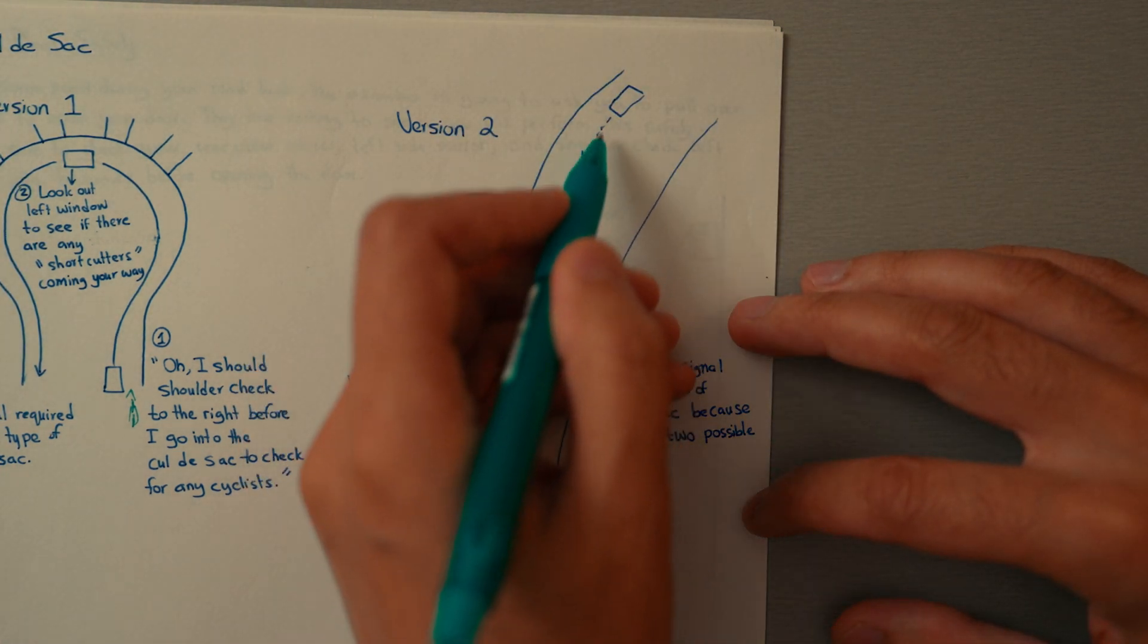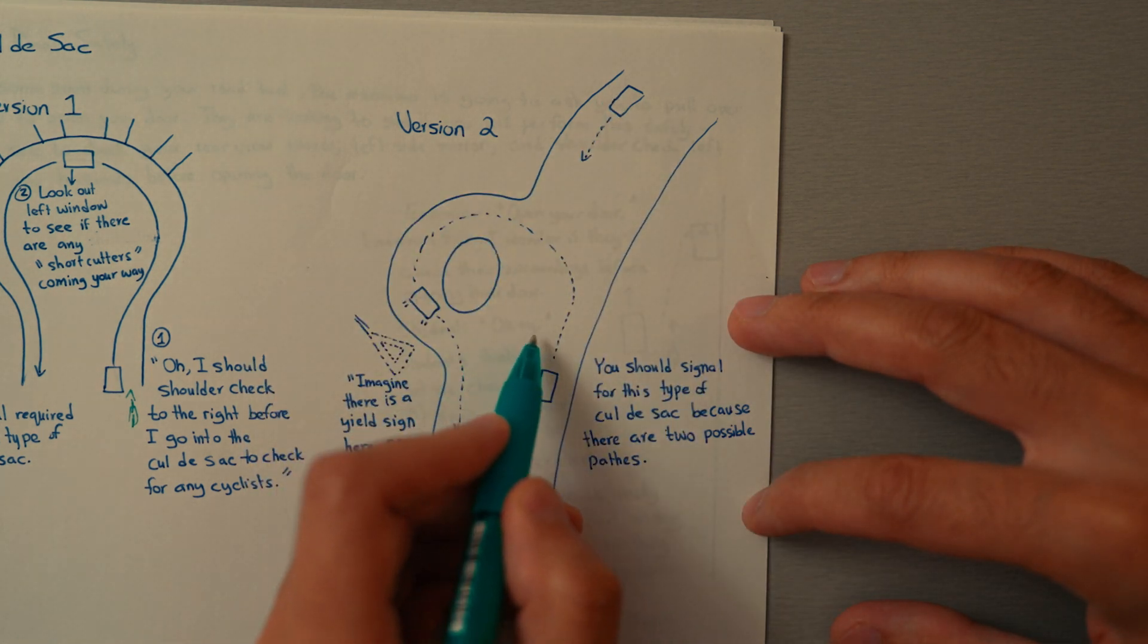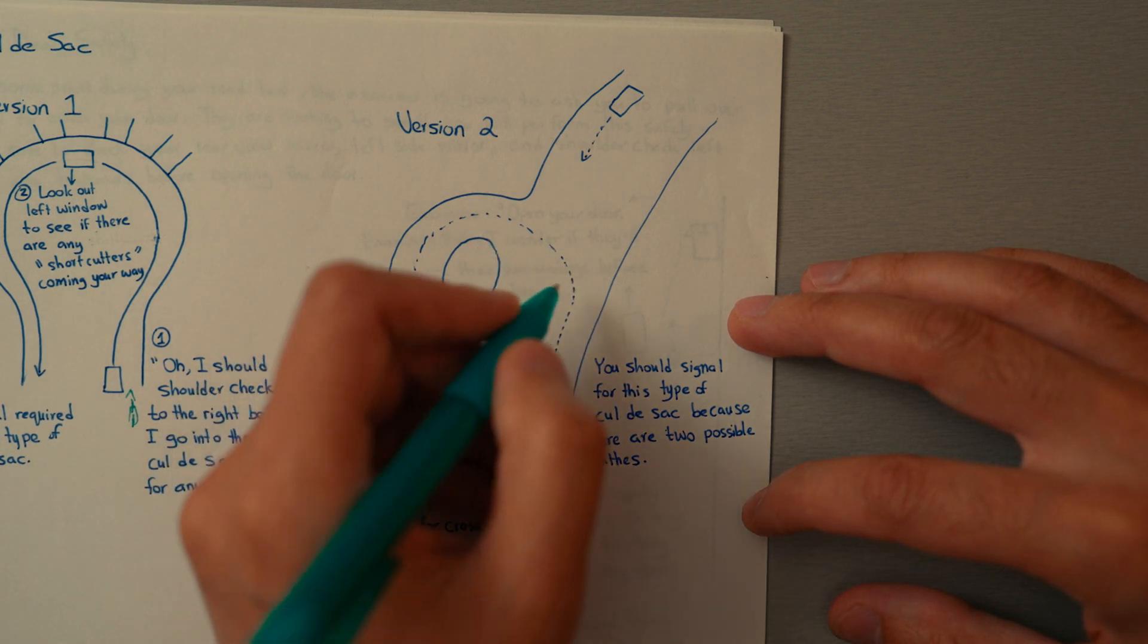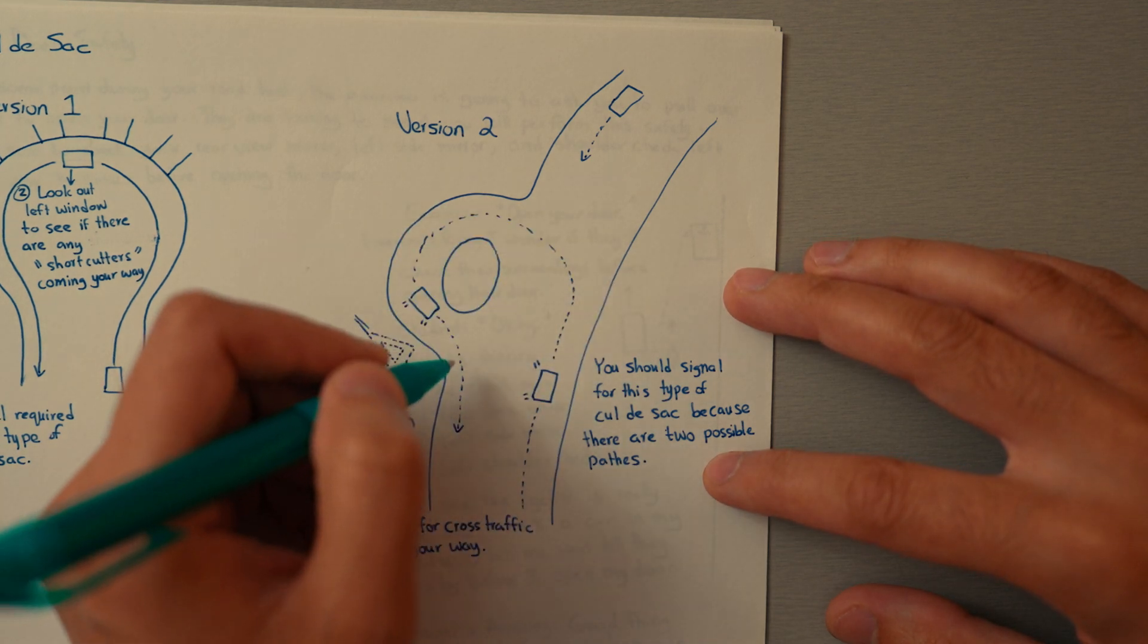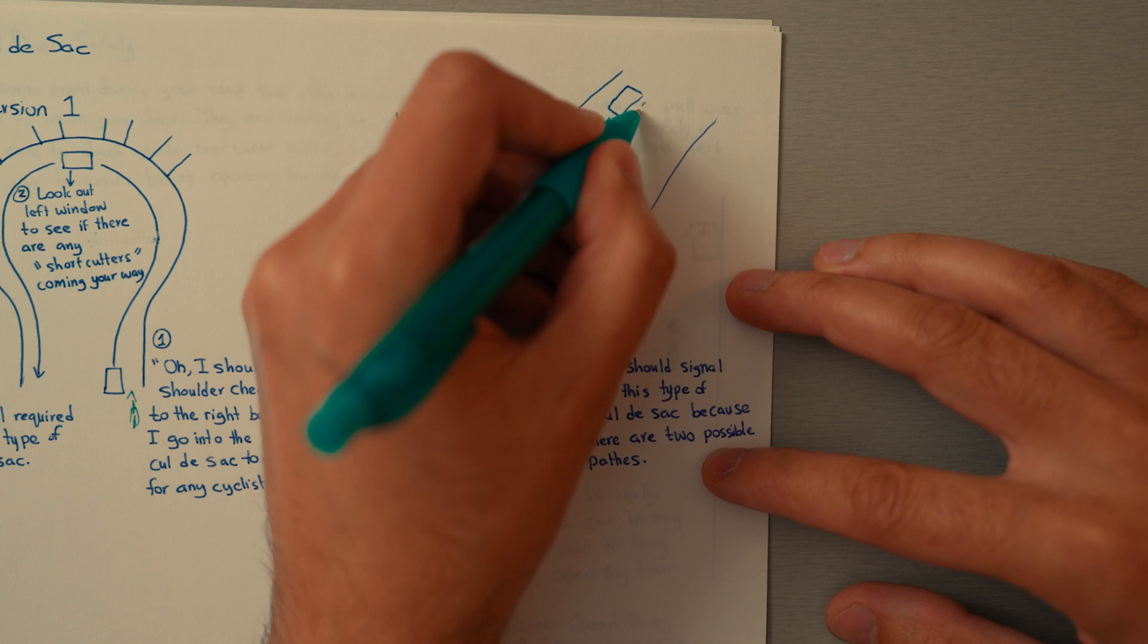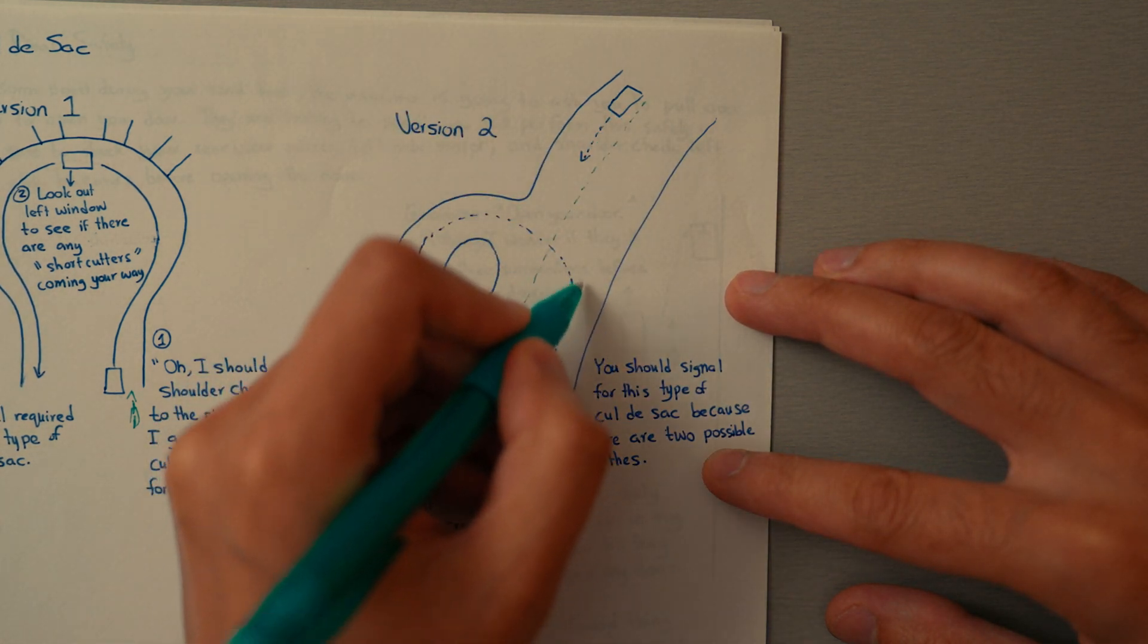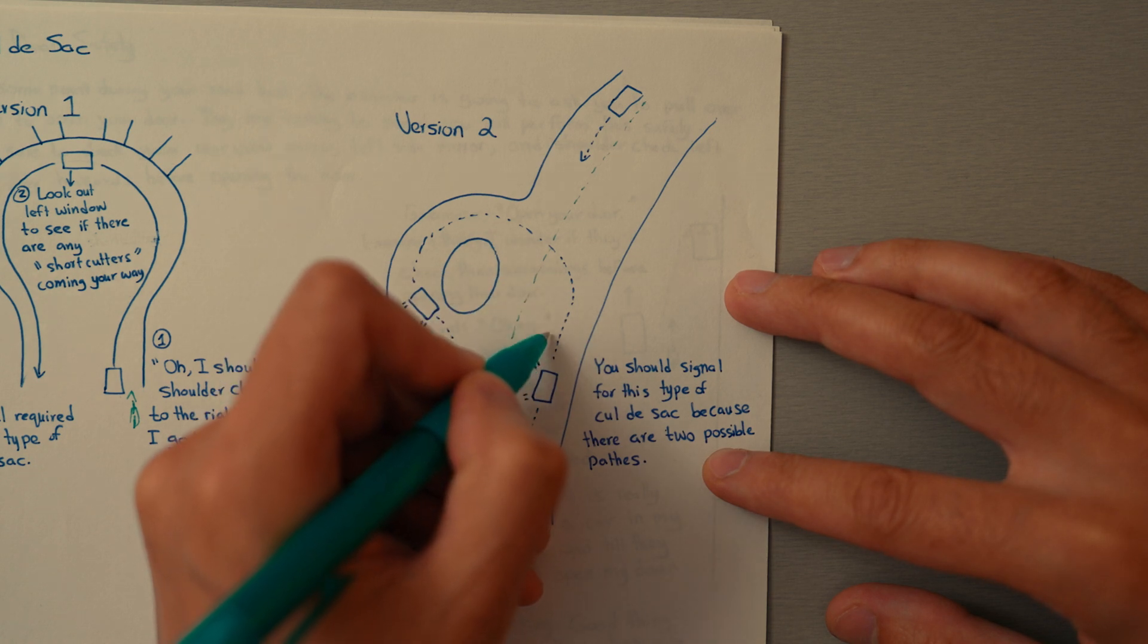You first need to yield the way to oncoming traffic, and then it's just like a regular left turn at an intersection. If this is in a residential area with no center divide line, you should imagine where the center divide line would be and make a nice left turn. Don't shortcut into the cul-de-sac like this, because this extends how long you're in the oncoming traffic's path.